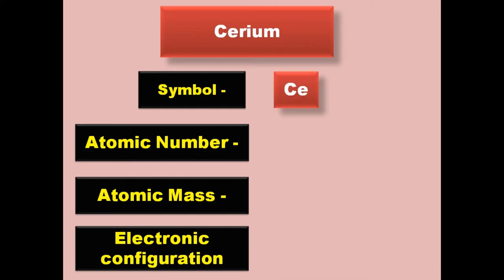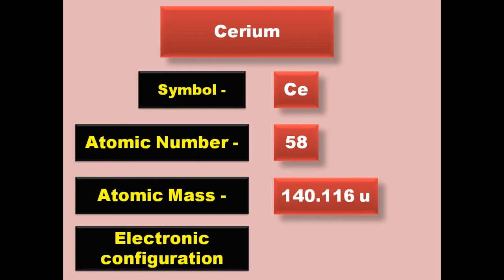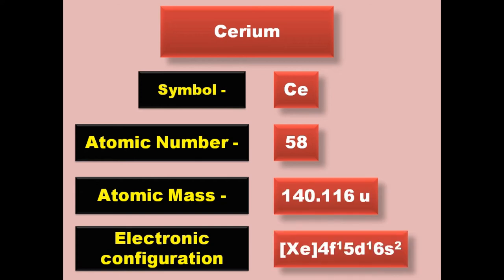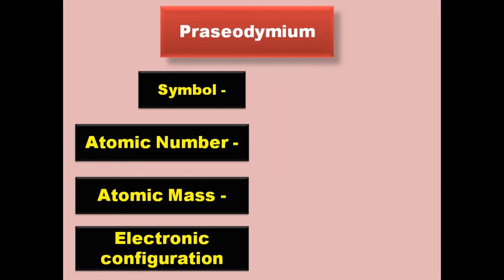Cerium has symbol Ce, atomic number 58, atomic mass 140.116, electronic configuration [Xe] 4f1 5d1 6s2. Cerium is a lanthanide and exists in solid form at room temperature.